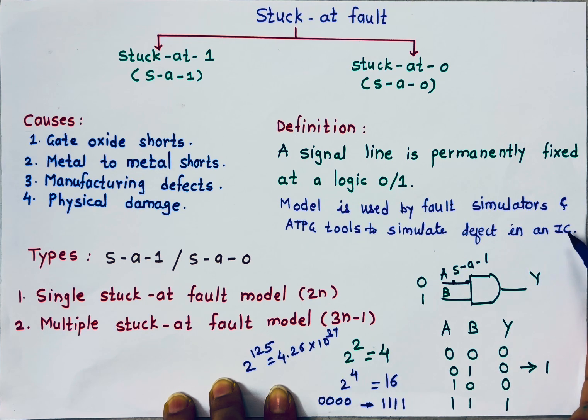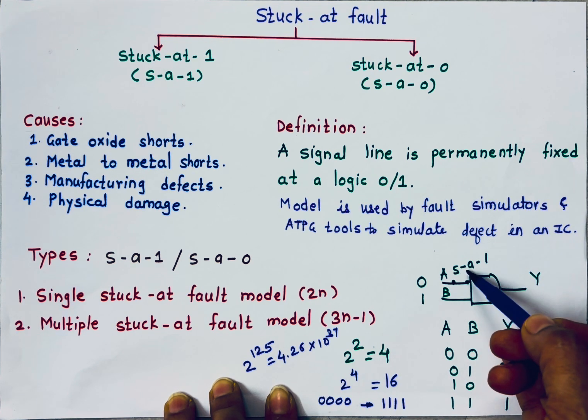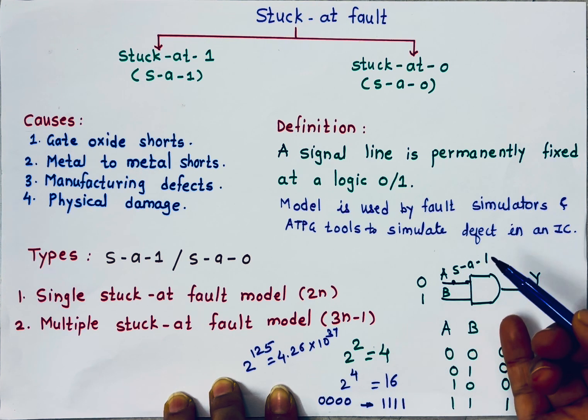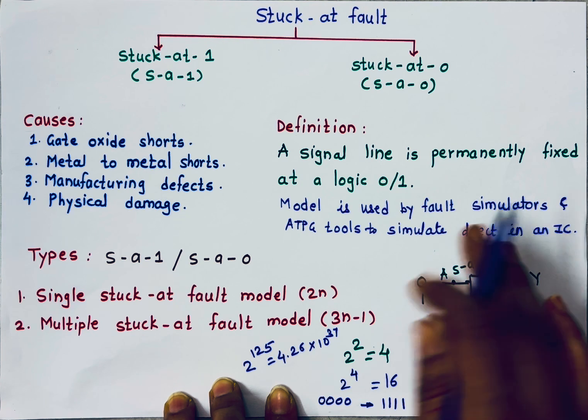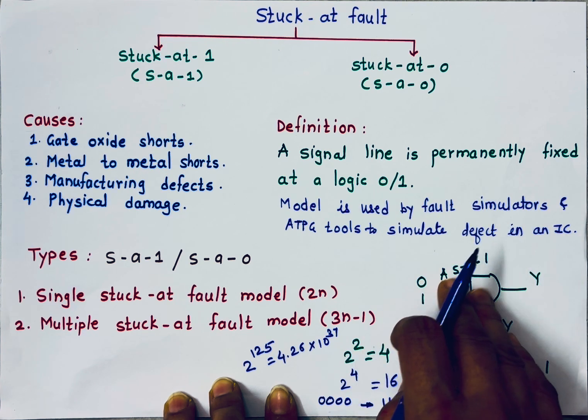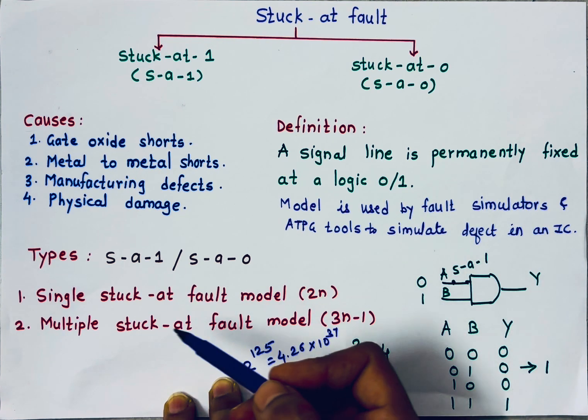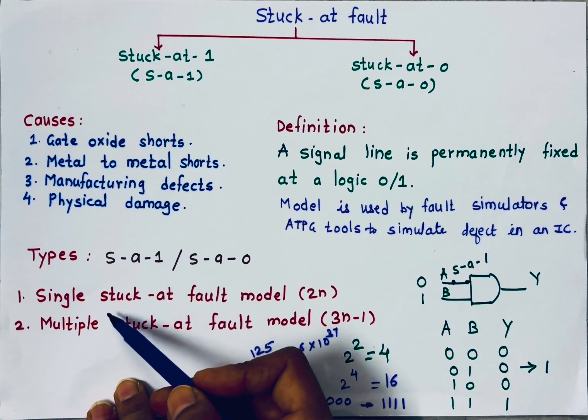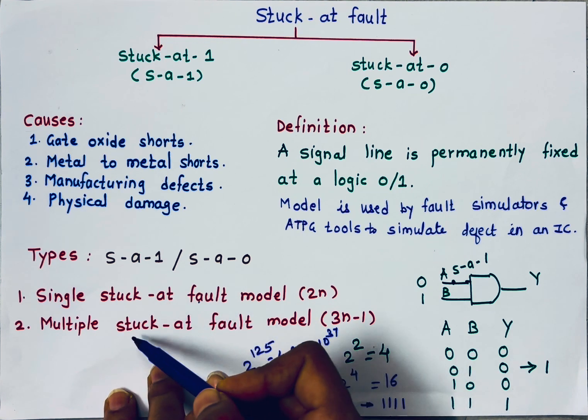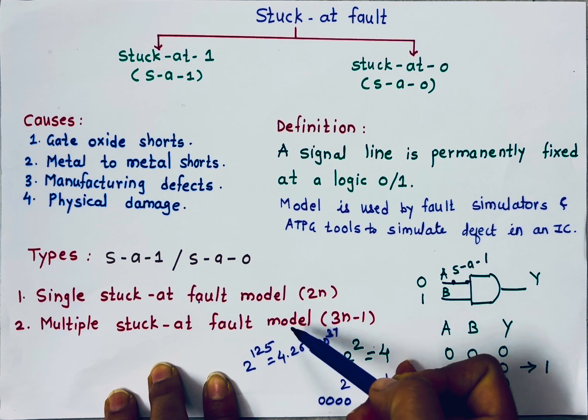This stuck at fault model is used by those fault simulators and automatic test pattern generation tools to simulate defect in an IC. To test this stuck at 1 fault, instead of applying 0,0, 0,1, 1,0 and 1,1, what we can apply? 0,1. We will talk about stuck at 1 and stuck at 0. There are single stuck at fault models and multiple stuck at fault models.